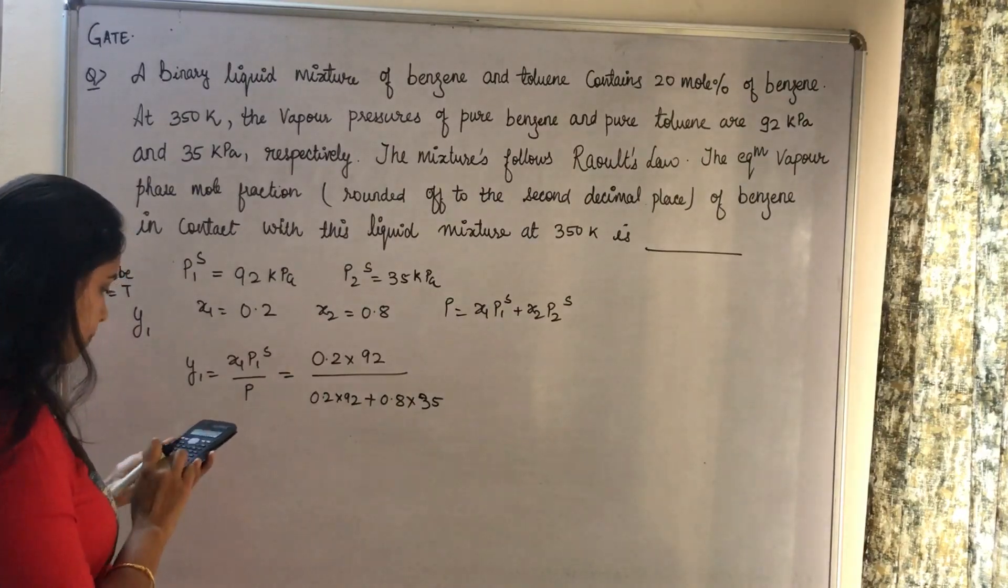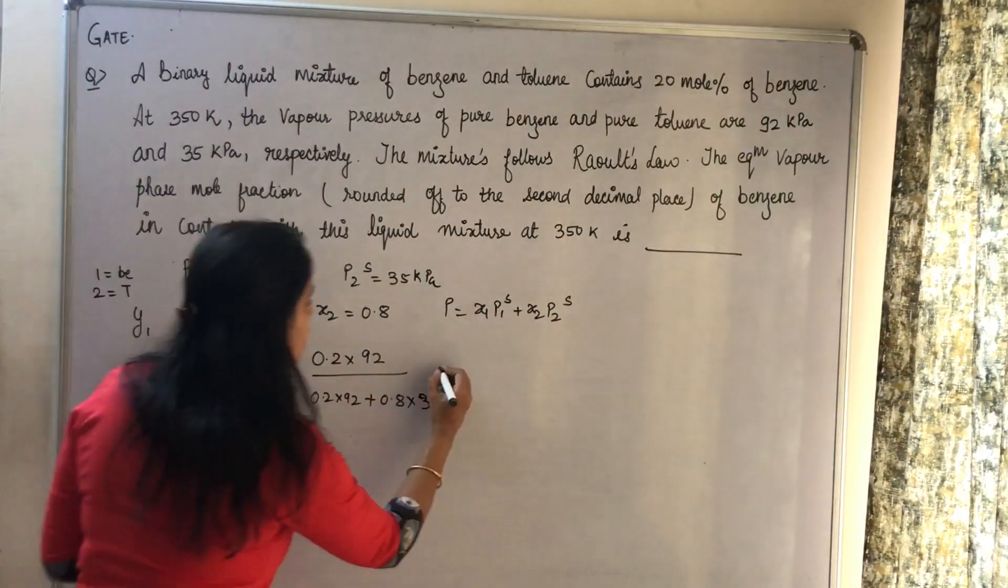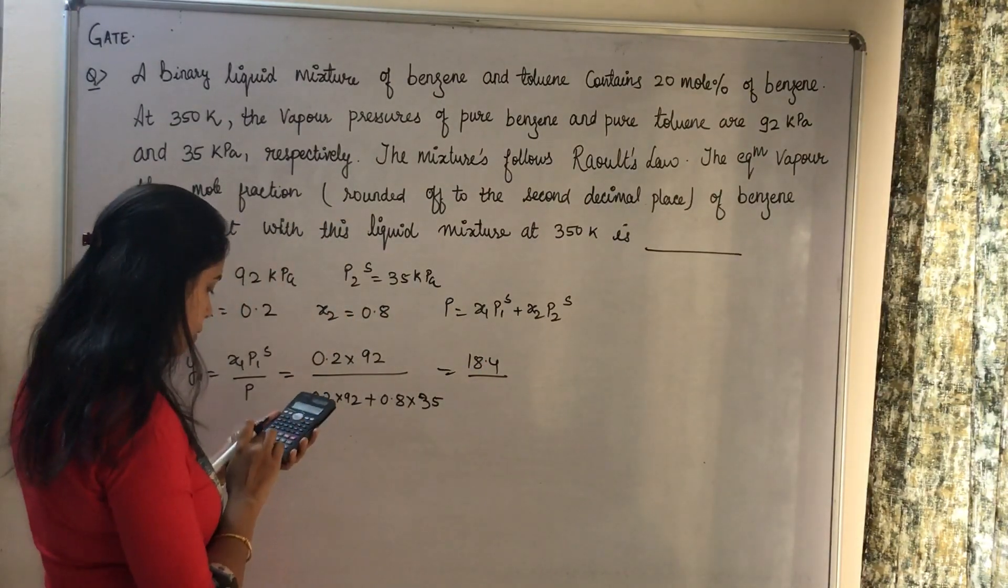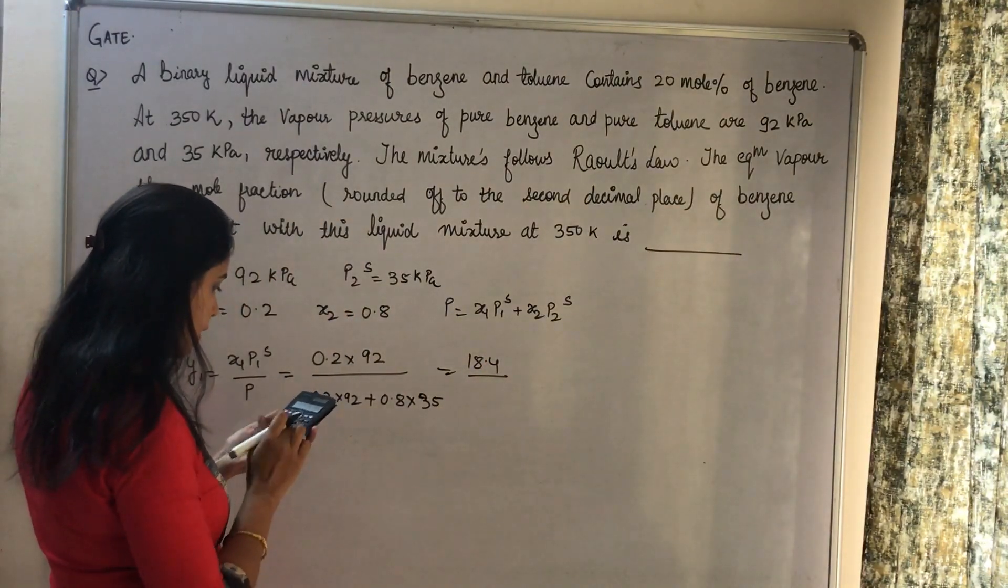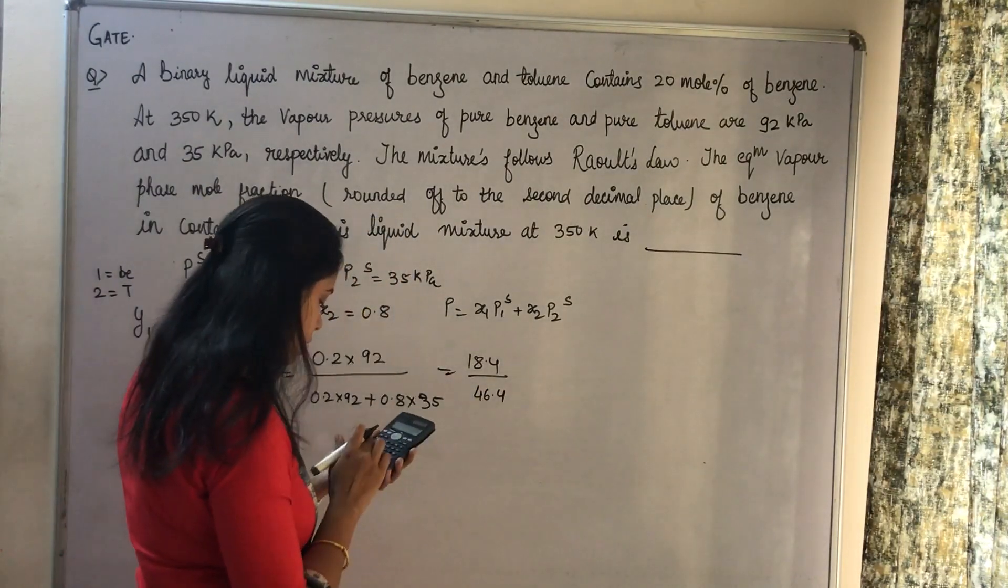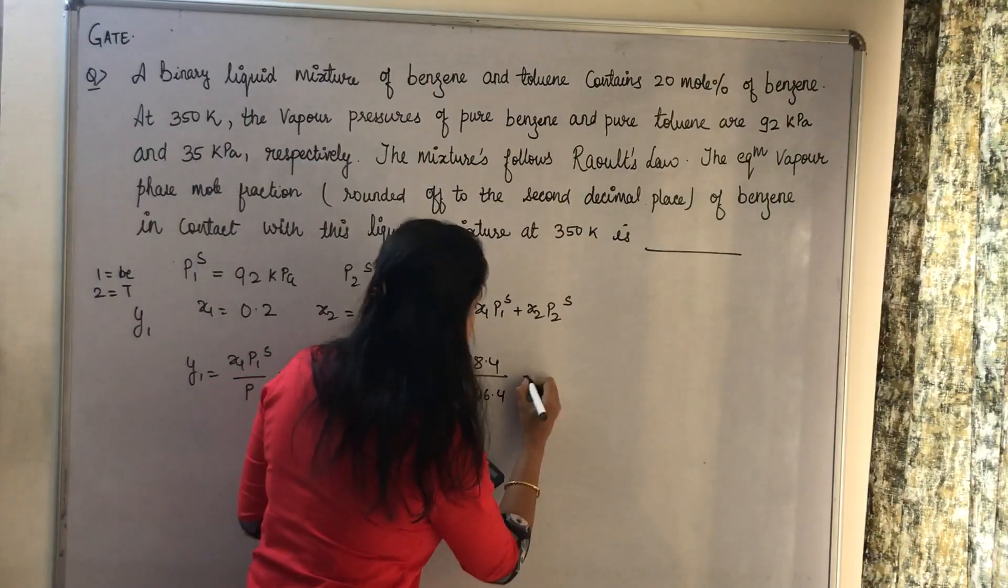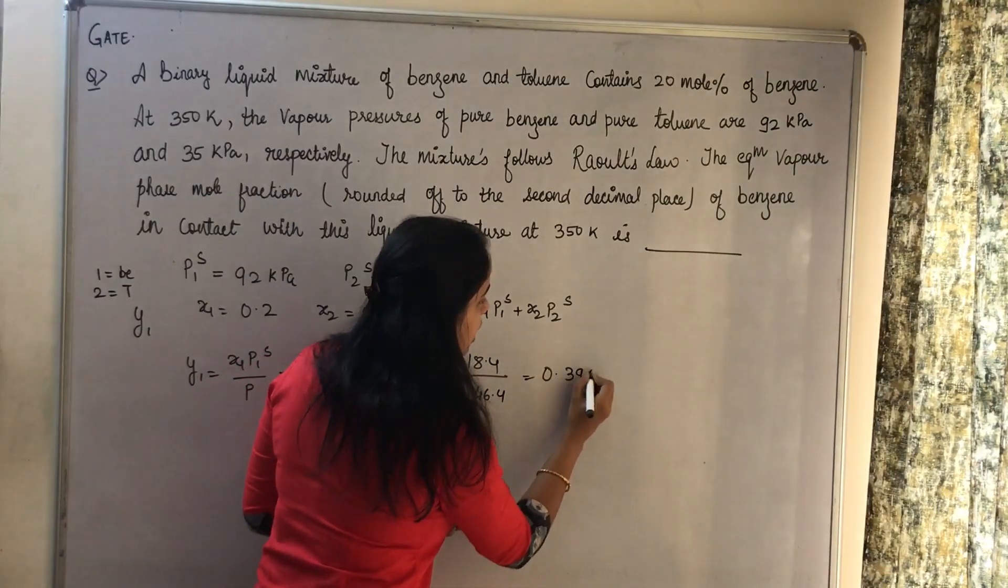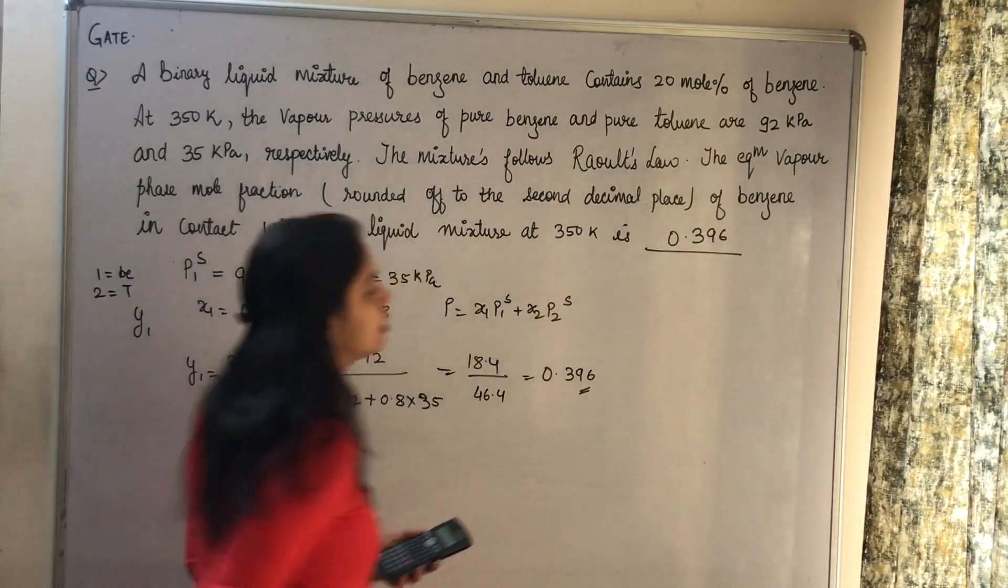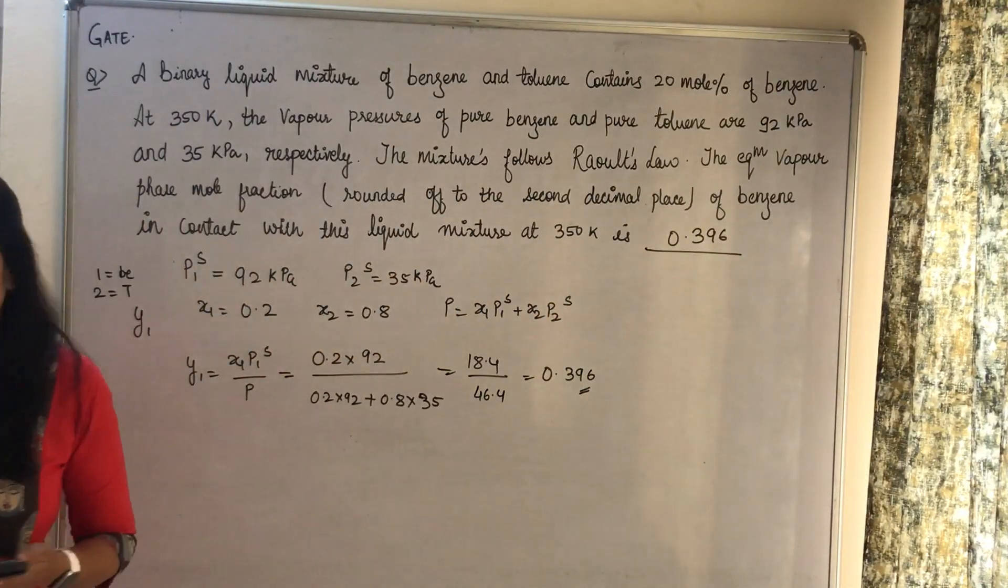So 0.2 times 92 is 18.4, and 0.8 times 35 is 28, giving a total of 46.4. So 18.4 divided by 46.4 gives the answer as 0.396. The correct answer is 0.396. Thank you.